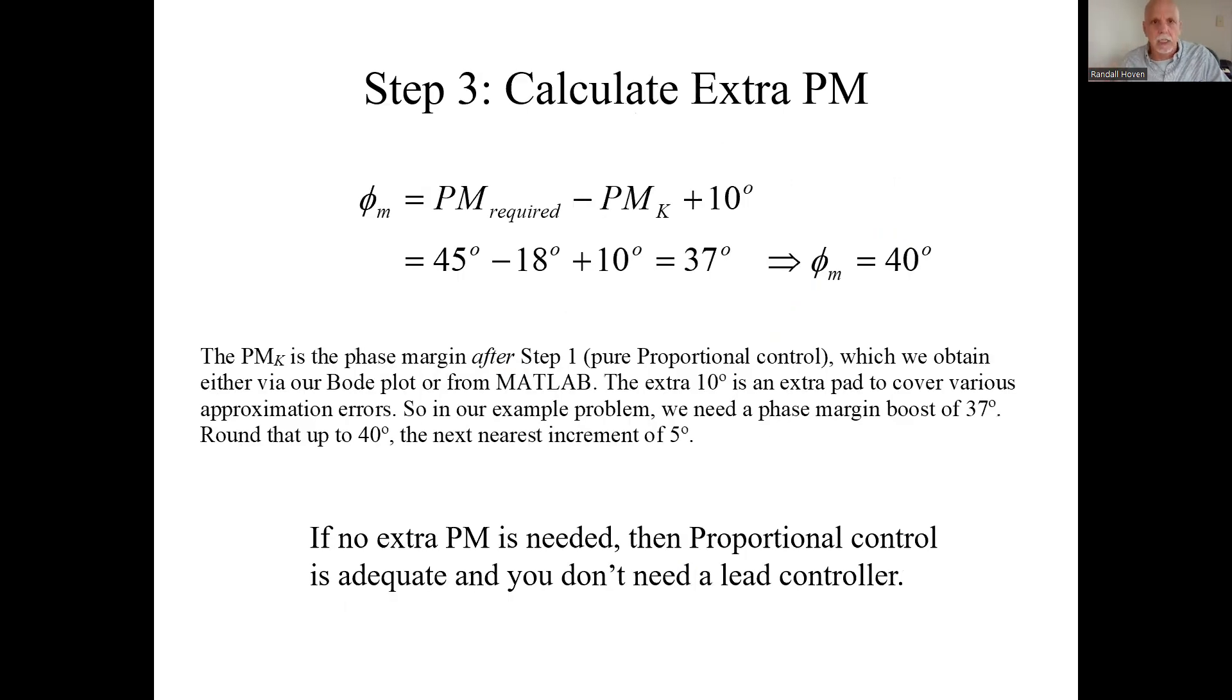So now we can calculate how much phase does the controller need. That is this little formula which would go in a formula sheet. It's the amount of required phase margin minus how much phase margin we already had plus 10 degrees to account for various approximation.